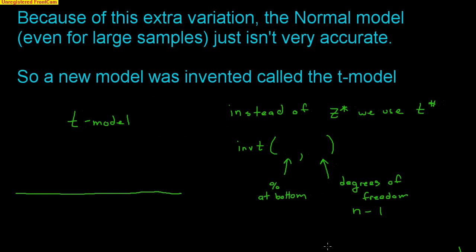Because of this extra variation — both the mean and the standard deviation of our sample are varying — the normal model, even for large samples, just isn't very accurate. A statistician discovered this problem and created a new model called the T model. The T model and the normal model are very similar; instead of using Z*, we use T*.